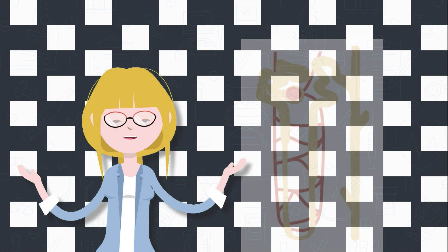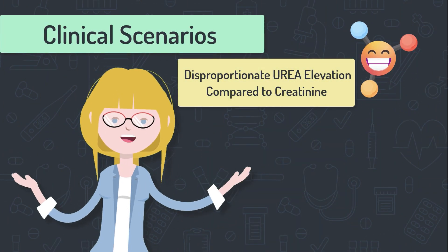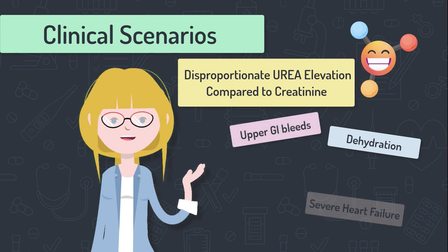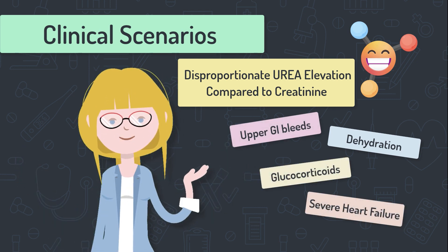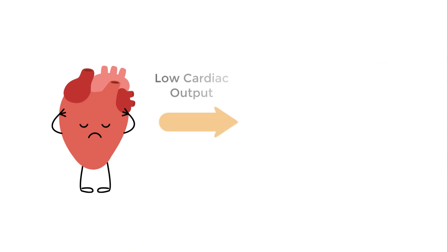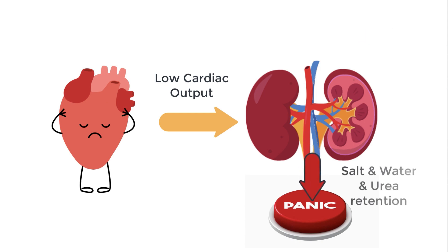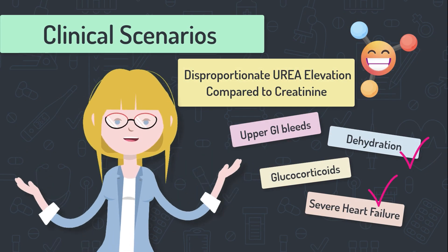Let's revisit the clinical scenarios in which urea levels are disproportionate to creatinine: dehydration, GI bleeds, heart failure, and corticosteroid use. We've unpacked the dehydrated patient. With severe heart failure, the issue is reduced cardiac output which makes the kidney think it's dehydrated — it receives less blood supply than it deems normal, so mechanisms for salt and water retention are ramped up and urea rises as a consequence. In heart failure the kidney perceives a low blood supply and thinks it's dehydrated even when the patient is floridly overloaded, so the patient reabsorbs salt, water, and urea.